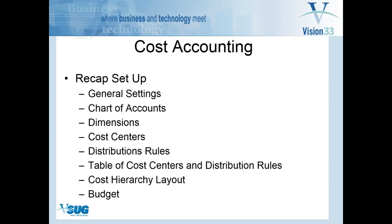It may make more sense as we follow through. The first things I'm going to review will be the recap of the general settings, then chart of accounts, how dimensions are set up, cost centers, distribution rules, the table of cost center distribution rules screen, the cost hierarchy layout — which is like a report layout — and the SAP budget with cost accounting.